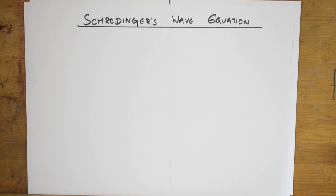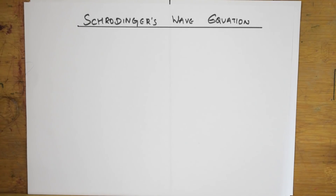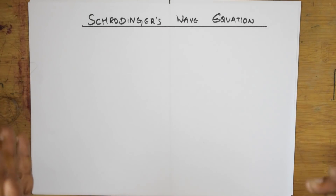Welcome back students. After loads of numericals in Structure of Atom, I'll be finishing off the chapter with the Schrödinger wave equation as well as angle nodes and radial nodes. This is a thorough revision — everything is in the playlist. Please maintain a separate notebook for your world of chemistry, because I'll be doing different types of revisions: concept ones, numerical ones, and formula ones. It's a package of the whole chapter.